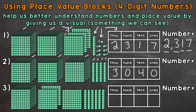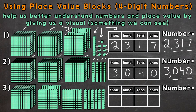Standard form, we have 3040 — zero ones, four groups of 10 which has a value of 40, zero hundreds, and three thousands which has a value of 3000.